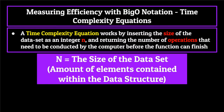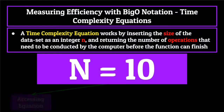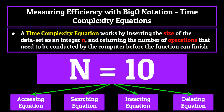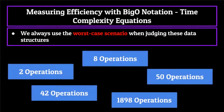So for example, if we have an array with a size of 10, we would place 10 into the different efficiency equations for accessing, searching, inserting, and deleting that represent the array. Returned back to us would be the number of operations that need to be conducted by the computer before completion of that function. All you need to know is that these equations help represent efficiency amongst different data structures. Also, an important thing to note is that we always use the worst case scenario when judging these data structures, because we always want to prepare for the worst and know which data structures can perform under the worst conditions.